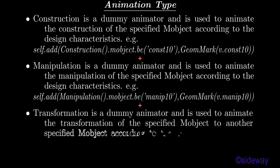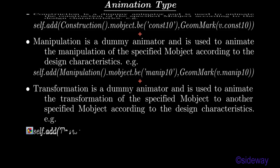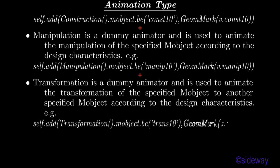Transformation is a dummy animator used to animate the transformation of the specified object to another specified object, according to the design characteristics. For example: self.add(Transformation.mobj.b.const10, geometry_mark.b.trans10).